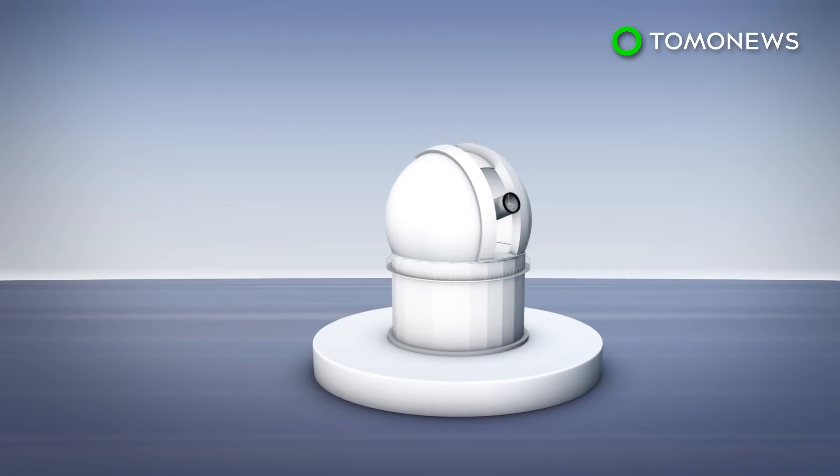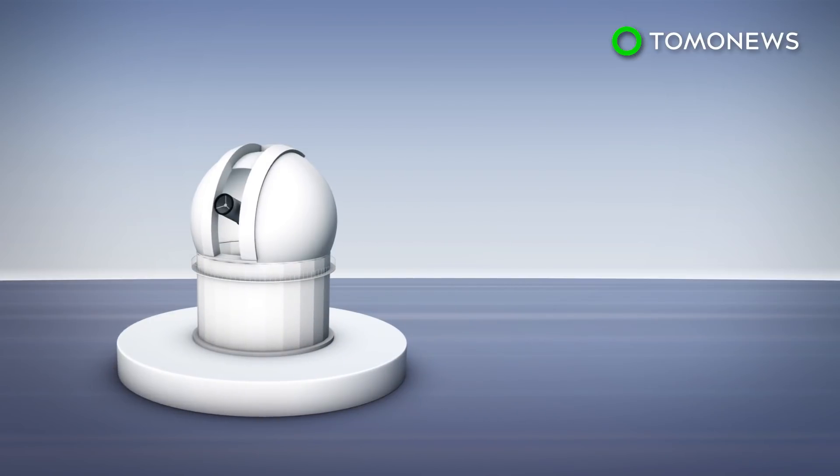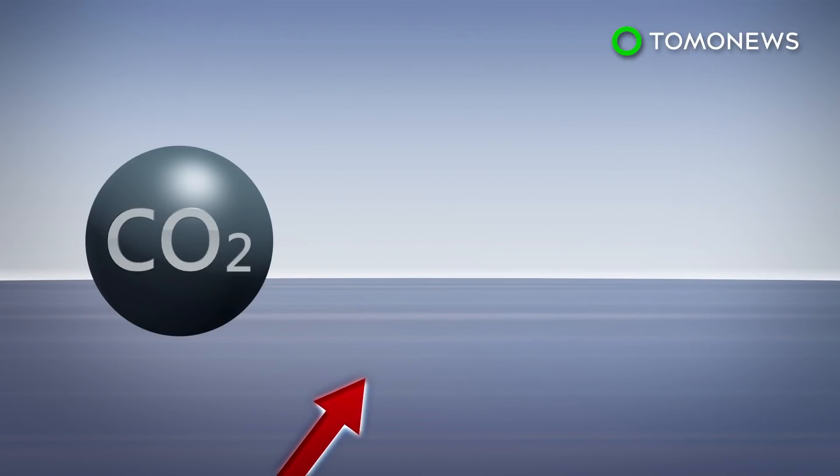According to data from the observatory, carbon dioxide concentration levels were recorded to be over 415 parts per million, or PPM. According to the NOAA, the last time carbon dioxide concentration levels were this high was more than 3 million years ago.